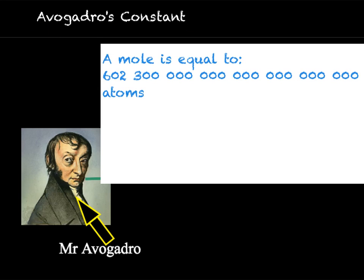In order to work with moles, we need to be aware of Avogadro's constant. Avogadro's constant states that a mole is equal to 6.023 times 10 to the 23. When we get precisely this number of particles of any element or compound, then we have exactly one mole, as they will weigh exactly the same number of grams as the relative atomic mass.